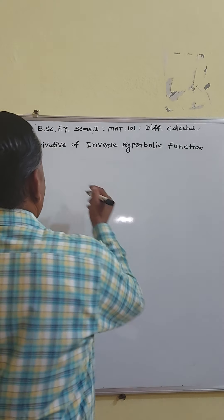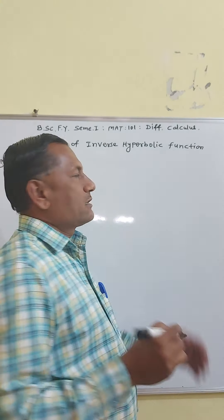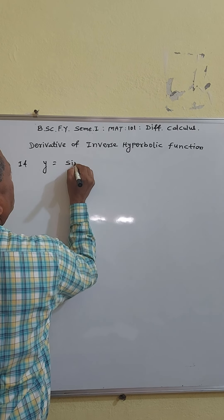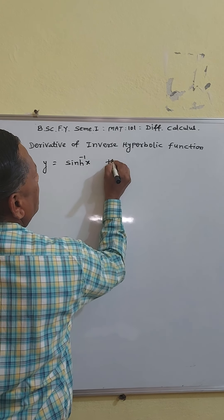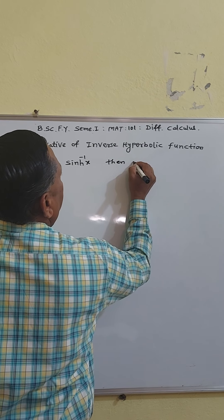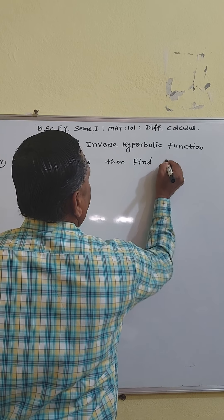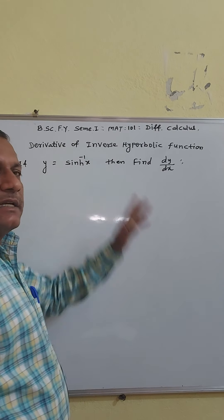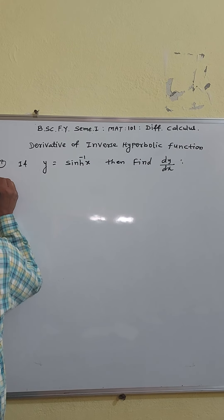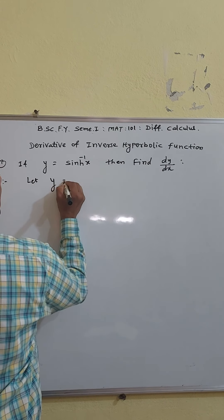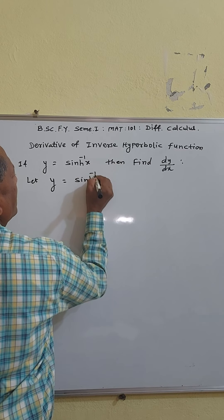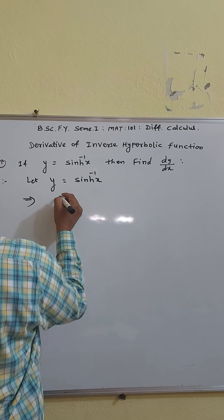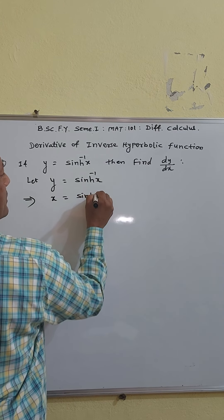First, we find the derivative of sinh⁻¹x. If y is equal to sinh⁻¹x, then find dy/dx — that is, d/dx of sinh⁻¹x. Let y equal sinh⁻¹x. This can be written as x is equal to sinh y.